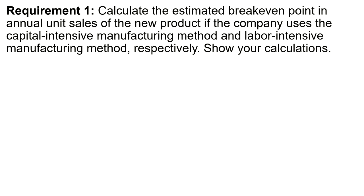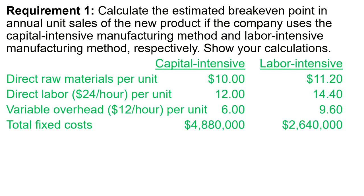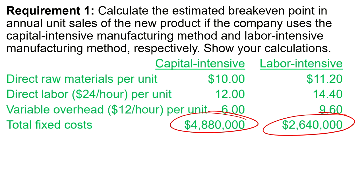Starting with requirement one — calculating the break-even point for both methods. We need to know the fixed costs and the contribution margin per unit for each method. Going back to the information provided, we have the fixed costs for both capital and labor intensive methods, and the variable costs of production.